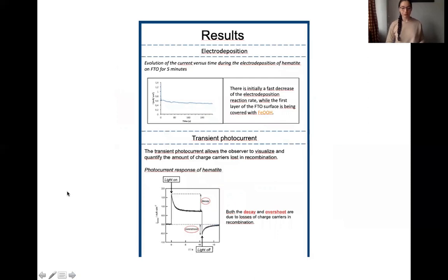I'm going to show you now some results. First concerning the synthesis of our hematite that is done via electrodeposition. During the electrodeposition, we observe an initial decrease in our current while the first layer of material is put on top of our supports and that is followed by a pretty stable current.